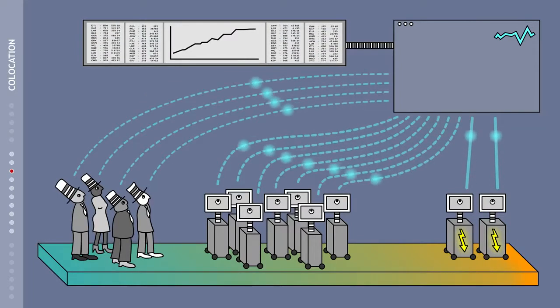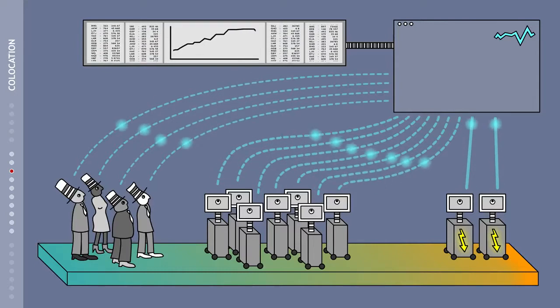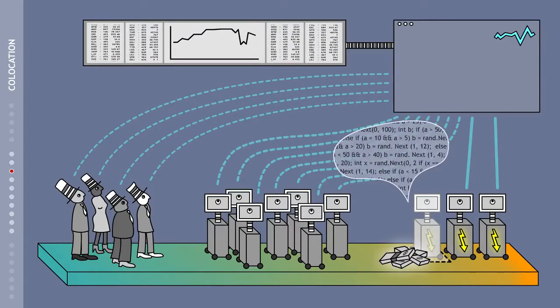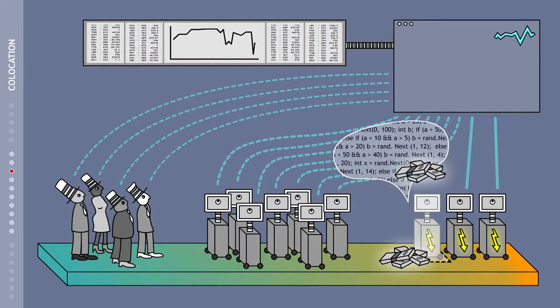Disadvantages include the fact that normal traders cannot match the speed of the high-frequency traders. Because firstly, not everyone can afford to rent space close to the market. And secondly, they cannot always pay for the specially programmed high-frequency trading algorithms.